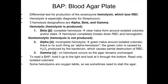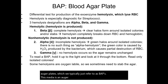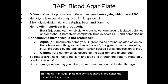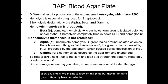The next media we're going to talk about for Lab Unit 2 are blood agar plates, which we typically just refer to as BAPs. This media is an agar plate that contains sheep blood, hence the name blood agar plate, and this is a differential media. It's going to allow any and all organisms to grow on this plate, but they're going to grow differently based on whether or not they have hemolysins.